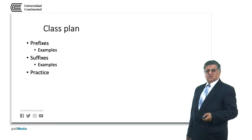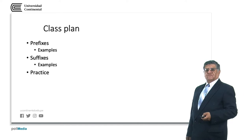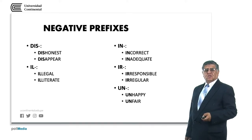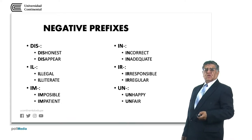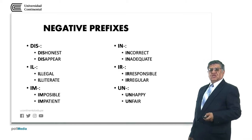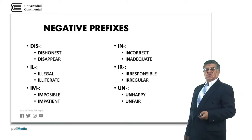I'm sorry that it's not possible to expand much on each example, but you need to just pay attention to the form it has and also to the meaning. Negative prefixes: dis- as in dishonest, disappear; ill- as in illegal, illiterate; im- as in impossible, impatient; in- as in incorrect, inadequate; ir- as in irresponsible, irregular; and un- as in unhappy, unfair. All these prefixes mean the opposite or the negative form of the situation expressed.